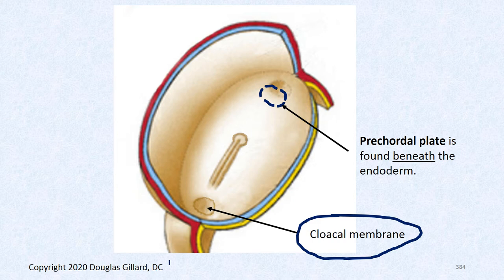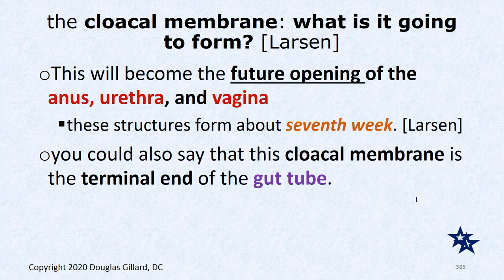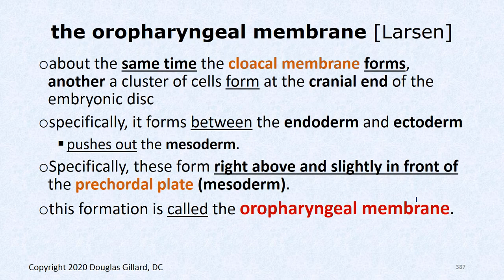The cloacal membrane will become the anus — the terminal end of the gut tube — the end of the road where fecal material exits. It will also form the urethra and vagina in females. This occurs around week seven. The oropharyngeal membrane is similar to the cloacal membrane but forms at the front: about the same time the cloacal membrane forms, another cluster of cells forms at the cranial end, where ectoderm and endoderm morph together, squeezing out any mesoderm.